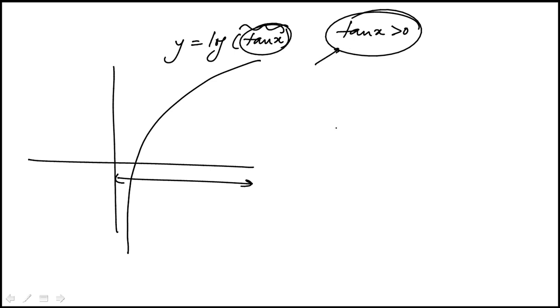So then the question is, what about the tangent function itself? It's helpful to know what the graph looks like. This would be pi over 2, and here it's minus pi over 2.